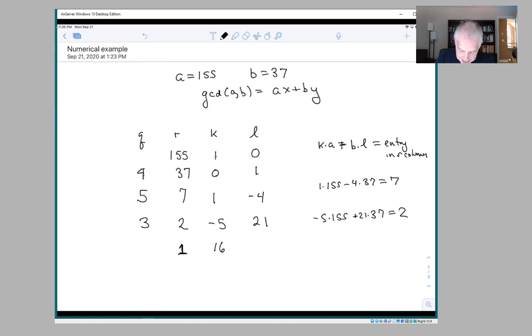1 minus 3 times minus 5 is 15 plus 1 is 16. Minus 4 minus 3 times 21 is 60 minus 67. And then you get that 16 times 155 minus 67 times 37 does in fact equal 1.